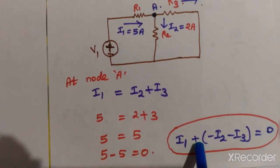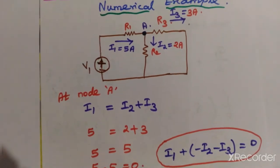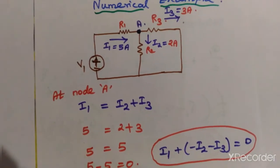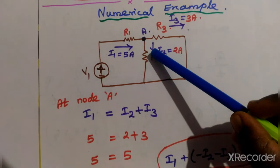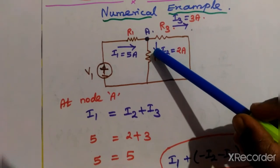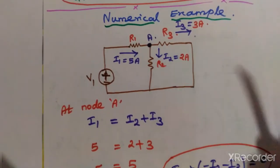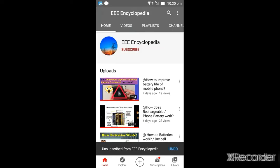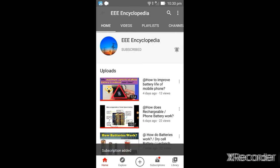The main application of Kirchhoff's current law is to identify the current in the branches of a network having multiple nodes. If you haven't subscribed, please subscribe to our channel Triple Encyclopedia, click the bell icon, and select 'All' to get all notifications.